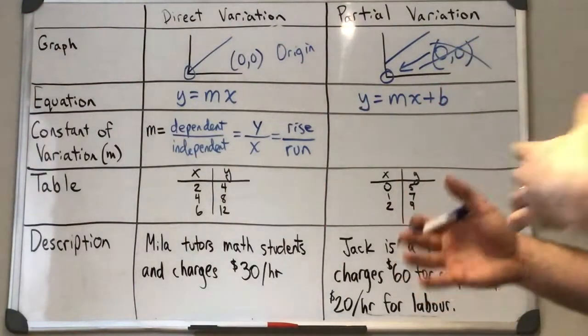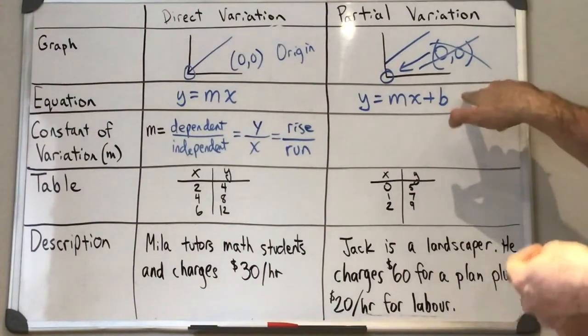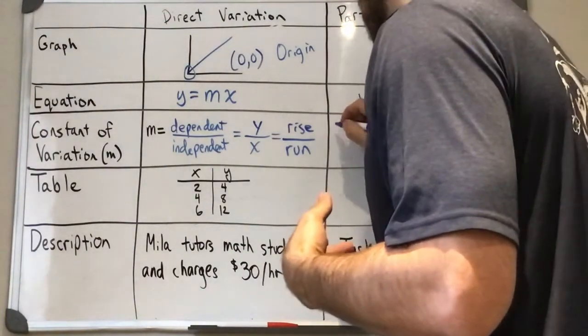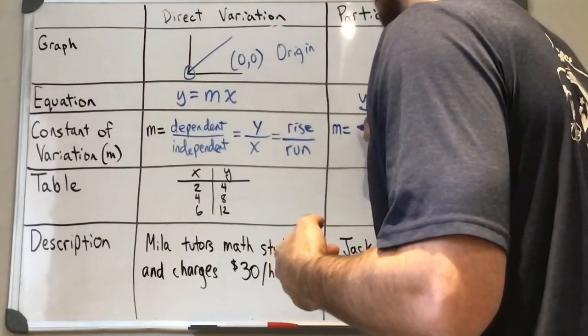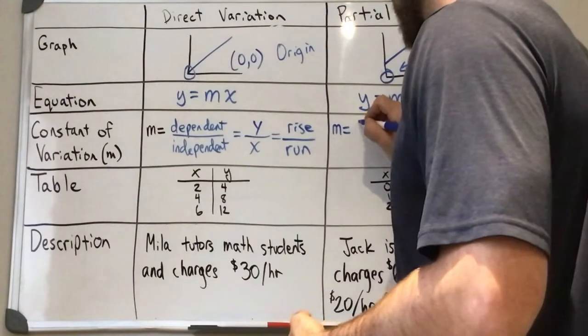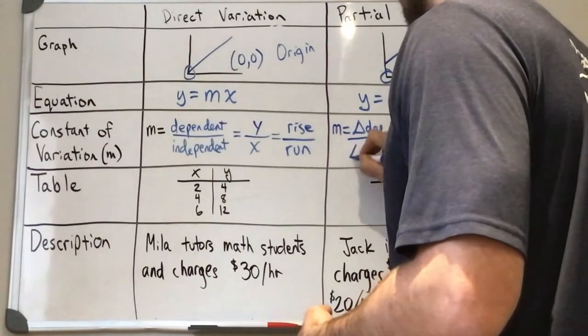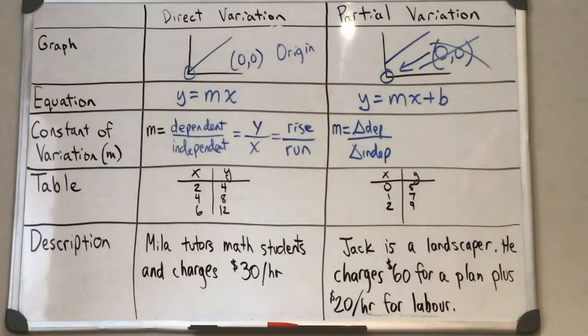So this one is similar, but we're going to consider some extra factors here. Because of this b, it's going to change how we calculate it. So our m is still going to be dependent over independent, but it's going to be the change in the dependent over the change in the independent.